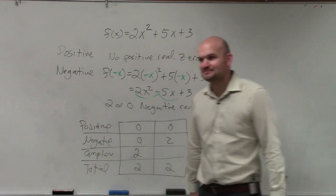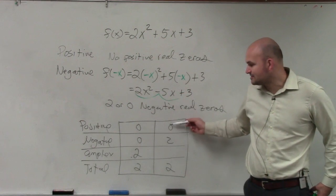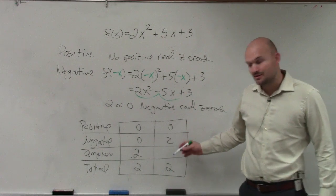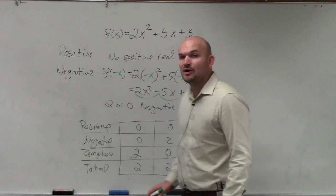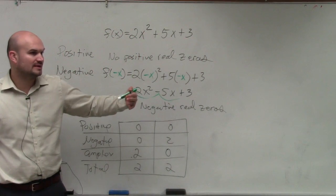2. 2, right? If I have 0 positive, 0 negative, I'm sorry, 0 positive, 2 negative, how many complex do I need? 0. So the number of possible complex solutions is going to be 2 or 0, OK? Again, Descartes' rule of signs does not tell you which one it is, which one is which. It just tells you what your possibilities are, OK?